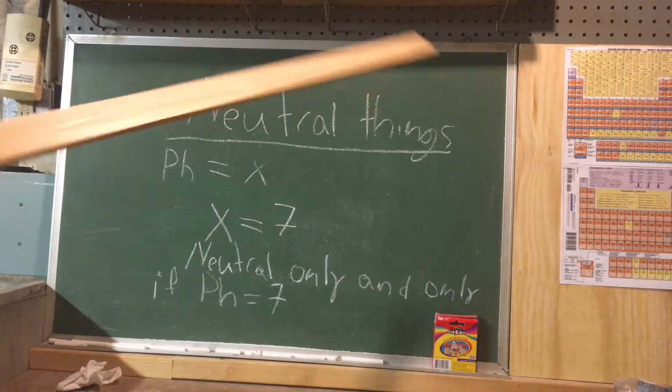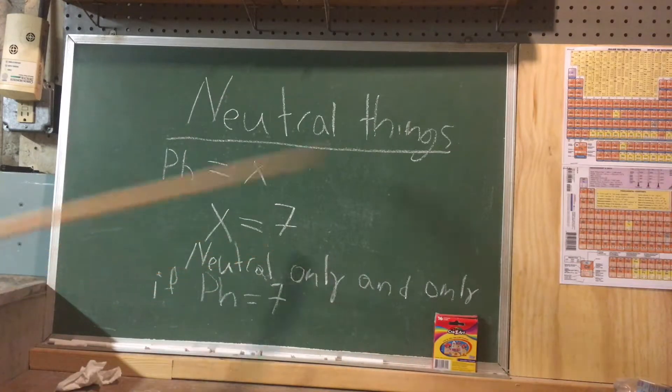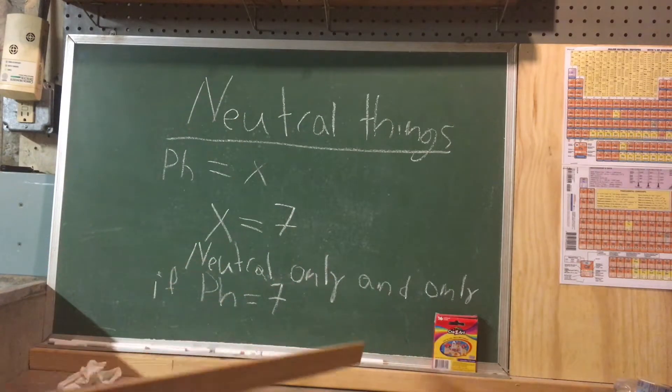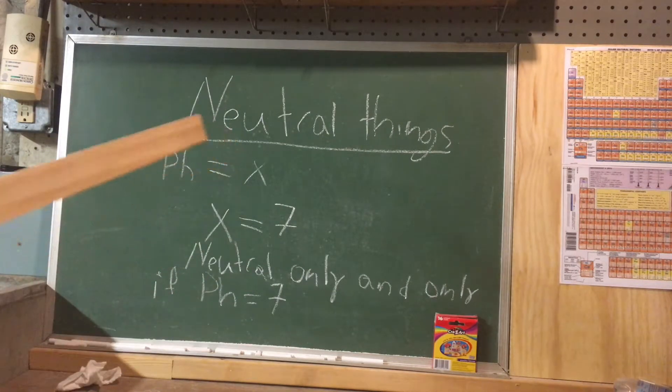For neutral things, pH equals x where x is equal to seven. It is neutral only and only if pH equals seven. There's your if and only statements from math.